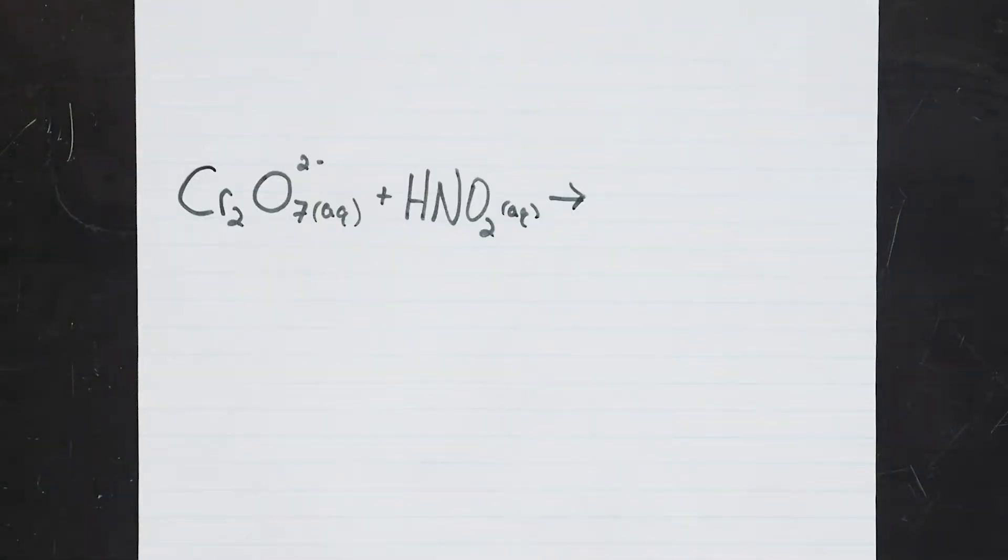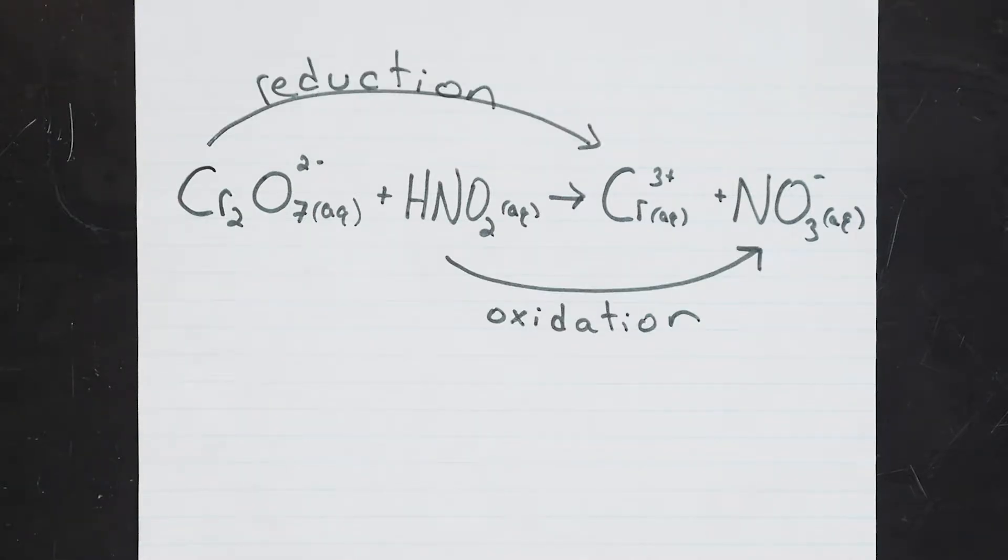Balancing redox equations is sometimes tricky, so let's recall the rules we learned for how to do it with a simple example that's a bit different than the one in your lab manual. First, split the reaction into two half reactions, one for reduction and one for oxidation. Luckily, this is already done for you in your lab manual.